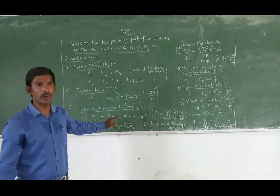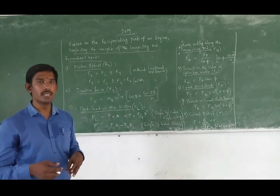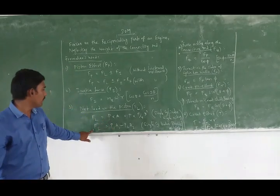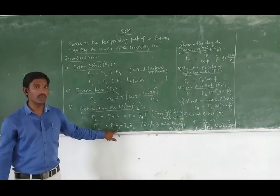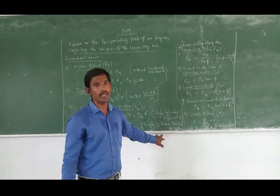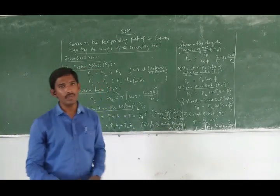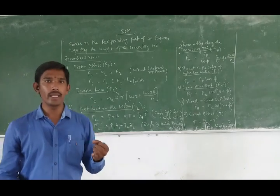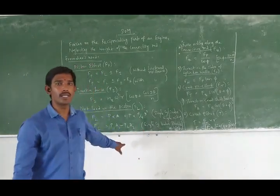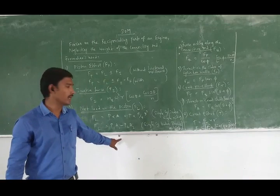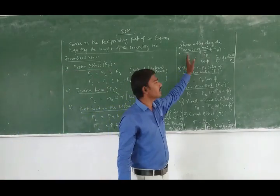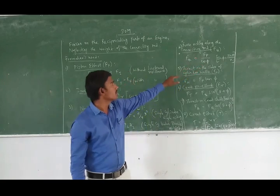For a double-acting engine, F1 equals P1·A1 minus P2·A2. This is the SAIL model double-acting engine. Stroke length and connecting rod length are given. So, the force acting along the connecting rod is Fq.